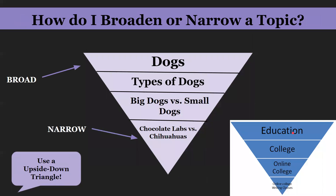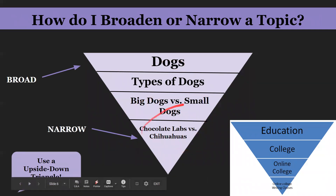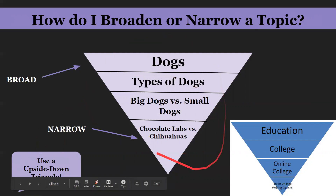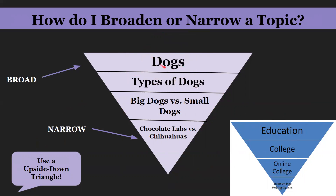So how do you broaden or narrow a topic? I did an example with dogs. Dogs is too broad, but then Chocolate Labs versus Chihuahuas is more narrow — though that could maybe be too narrow. When deciding on a topic, you can use an upside-down triangle. For my example, I started with dogs, then narrowed to types of dogs — still a huge topic. Then big dogs versus small dogs — still a little too broad. Then Chocolate Labs versus Chihuahuas.